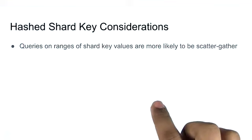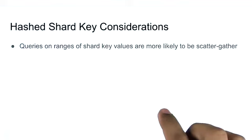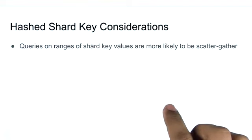Comparatively, a non-hashed shard key is more likely to produce documents that are on a single chunk in a single shard, meaning your range queries are more likely to be targeted with a non-hashed shard key.